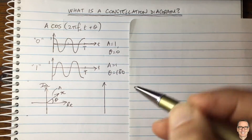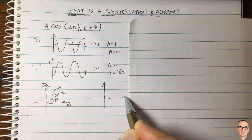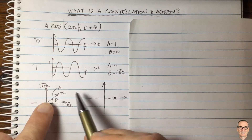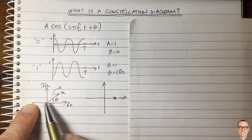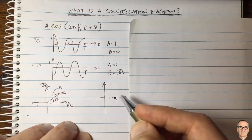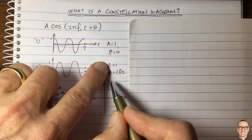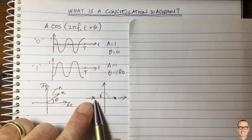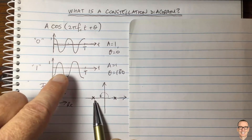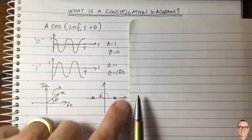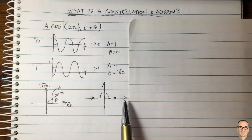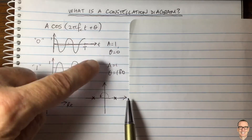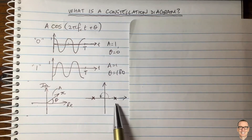In this simple binary case, we've got two possible values for x. One has amplitude equals one and phase equals zero — we count phase anti-clockwise from the real axis — so that's this point here. The other point also has amplitude of one but a phase of 180 degrees, and this is our other possible value of x. This is what we call the constellation diagram for binary phase shift keying, because we're using the phase to encode the data.